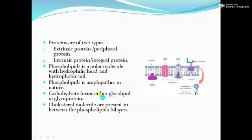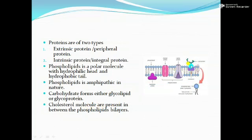Carbohydrates present in the plasma membrane are either glycolipid or glycoprotein. Glycolipid or glycoprotein means: either the carbohydrate is joined with a lipid, forming glycolipid, or the carbohydrate is joined with a protein, forming glycoprotein.